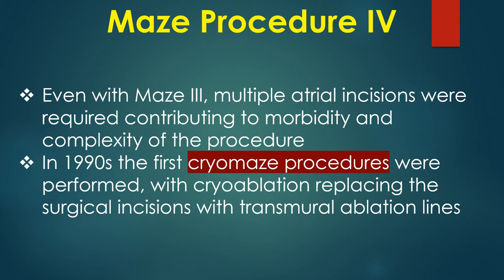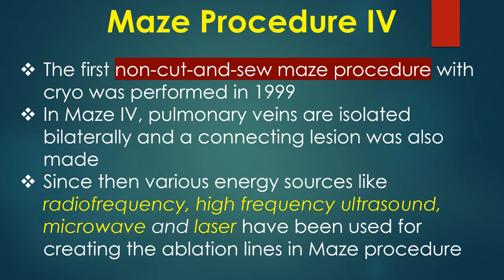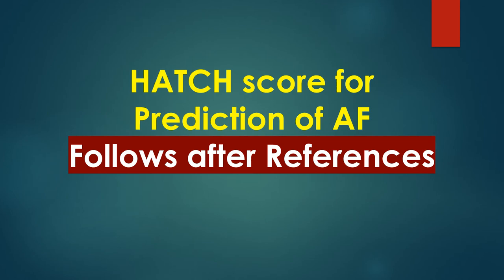In the 1990s, the first cryo-Maze procedures were performed with cryo-ablation replacing surgical incisions with transmural ablation lines. The first non-incisional Maze procedure with cryo was performed in 1999. In Maze 4, pulmonary veins are isolated bilaterally and a connecting lesion was also made. Since then, various energy sources like radiofrequency, high-frequency ultrasound, microwave, and laser have been used for creating the ablation lines in Maze procedure.